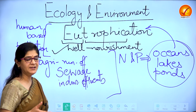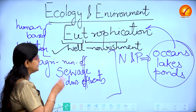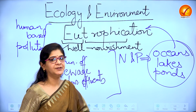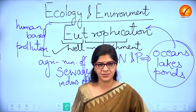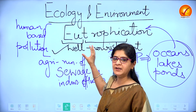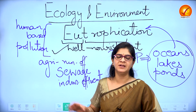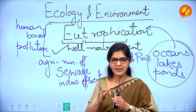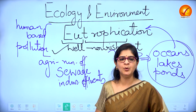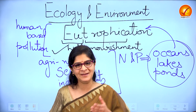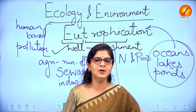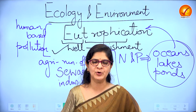To understand the term eutrophication, the best way is to go to the origin of the term. It has a Greek origin — 'eu' refers to 'well' and 'trophic' refers to nourishment or nutrients. So, breaking down the term, eutrophication simply means that whenever a water body like seas, oceans, ponds, or lakes are well-nourished, they can be called eutrophic water bodies.